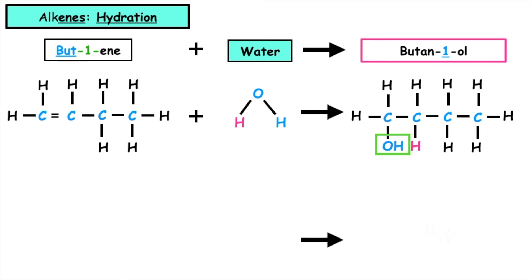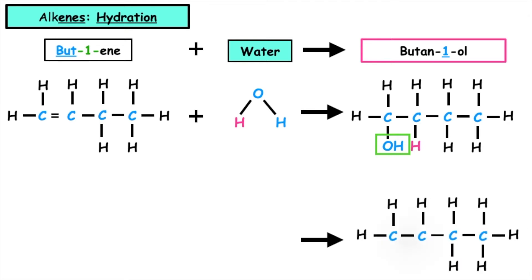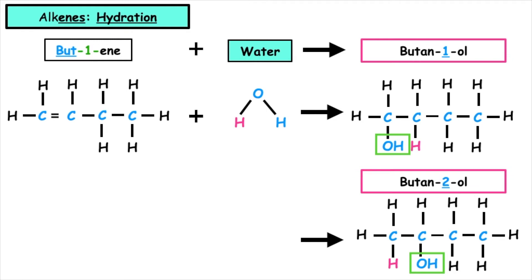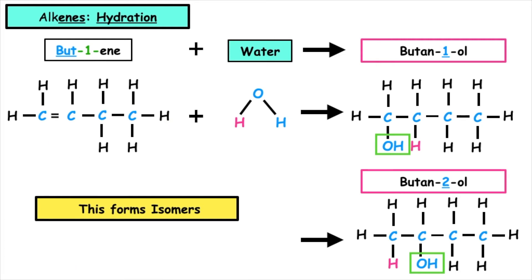However, if the H and the OH were to swap places, this means that the OH, which is our functional group, would now be on position two. This would give us the alcohol known as bute-2-ol. We can see that they both have the same number of carbons, hydrogens, and oxygens, so this means that we will form isomers.